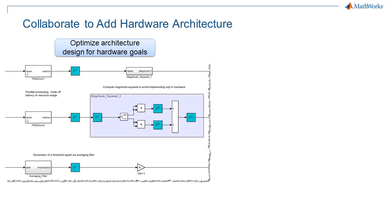Similar to adapting your algorithm for streaming behavior, the next level of refinement is to add hardware architecture. There are a lot of architectural-level decisions that will affect hardware performance and resource usage, and this really requires the expertise of hardware designers.